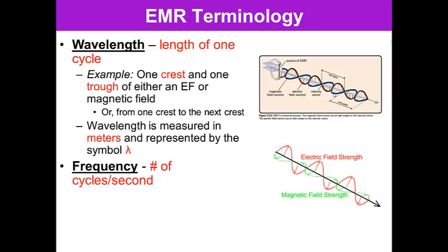The frequency of a wavelength is the number of cycles per second. The frequency is measured in a unit called hertz and is represented by the symbol F. So F is frequency and lambda, or the upside down Y, is wavelength.